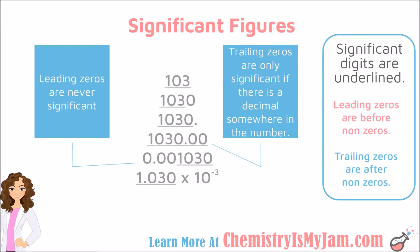When you write a number in scientific notation, you are only going to include significant figures on the left-hand side of the multiplication sign. Anything that you put there would be a significant figure. The times 10 to the exponent has nothing to do with your significant figures — it is just letting you know where to place the decimal, just like leading zeros let you know where to place the decimal. So in scientific notation, you only include significant figures in the number.